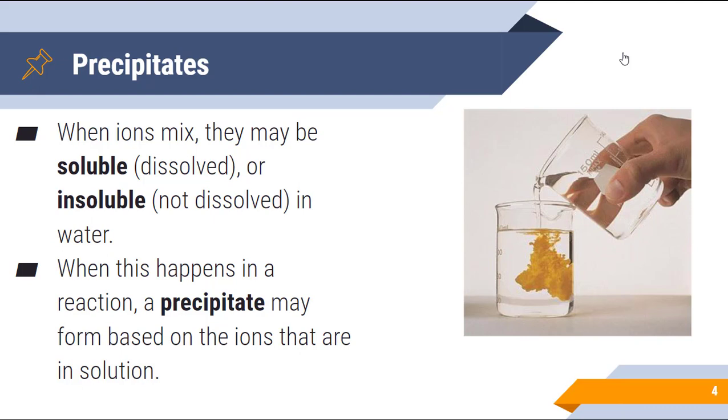When we take two aqueous solutions and we mix them together, a precipitate may form based on the individual ions that are present in the solution. If we take two sets of solutions that are soluble, we may end up forming an insoluble compound. That yellow solid that is formed into the solution is a precipitate.